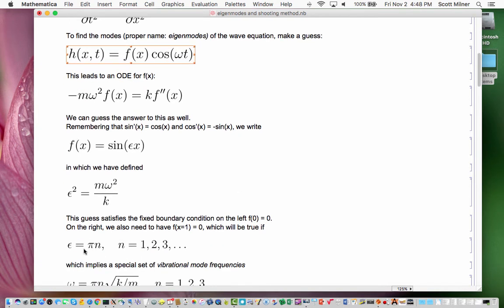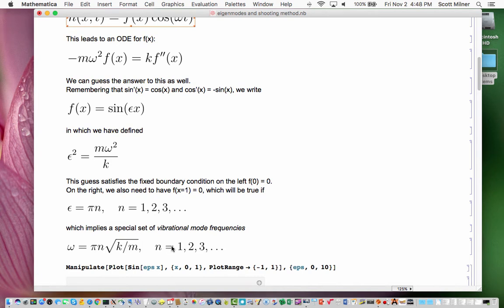And so epsilon has to be pi times n, where n is 1, or 2, or 3, or what have you. There are only special values of this guess, which correspond to special values of this frequency, the time frequency of the vibrating string. So there is a special set of vibrational mode frequencies of the string, which is given by this expression here.